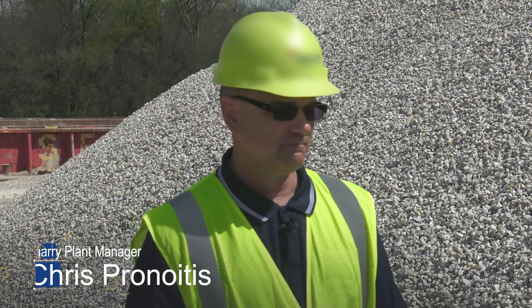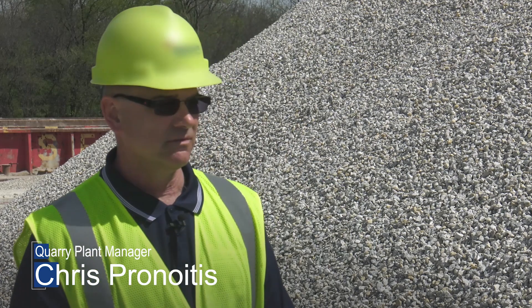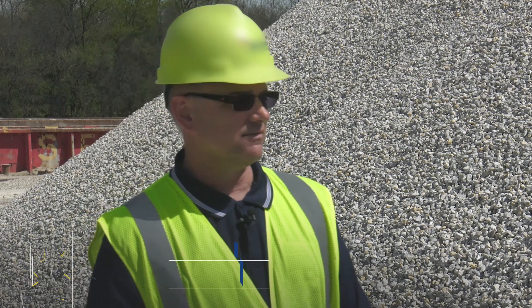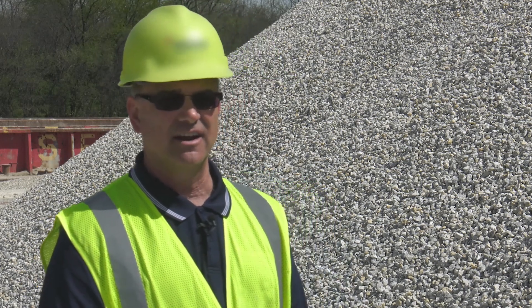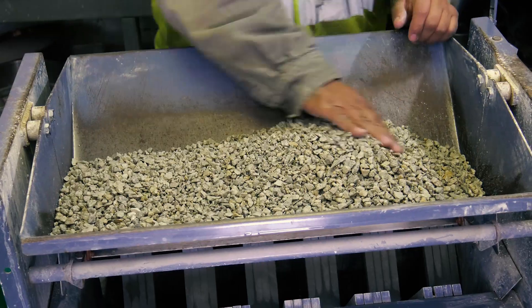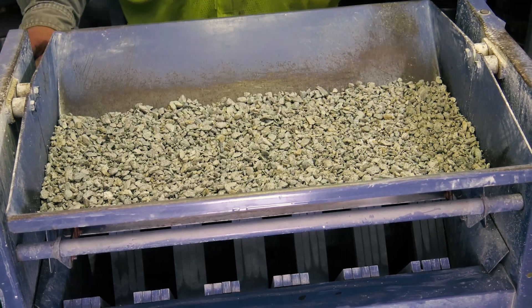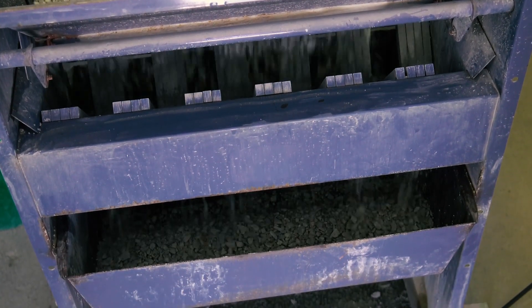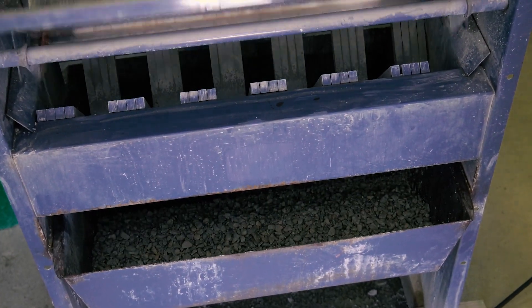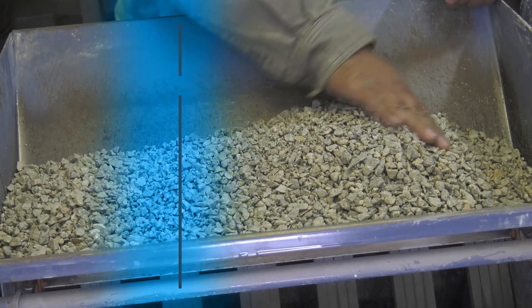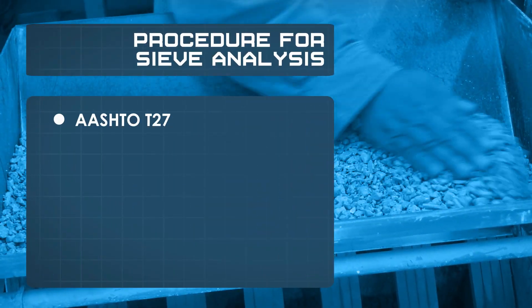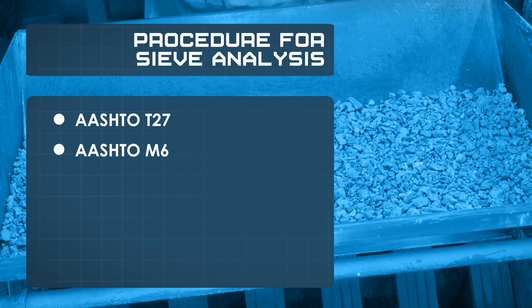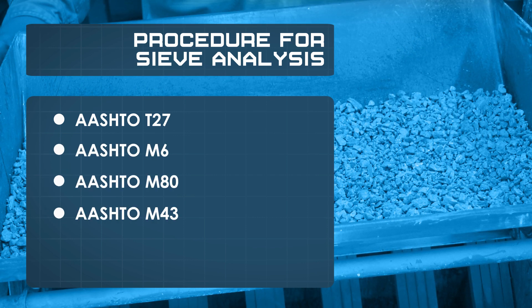In the QC lab, we check the size of the stone and the different quantities of the size aggregate required to be in the stone. Gradation is the particle size distribution of an aggregate as determined by a sieve analysis performed using wire mesh sieves with square openings. The procedure for sieve analysis is detailed in AASHTO T27, with sieve opening sizes listed in AASHTO M6, M80 and M43.